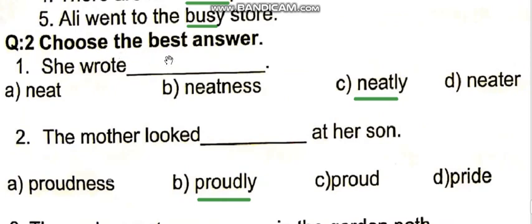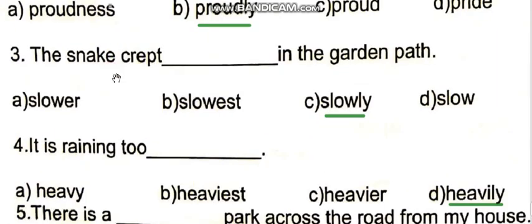Question number two: Choose the best answer. 'She wrote' — she wrote neatly. 'The mother looked blank at her son' — the mother looked proudly at her son. 'The snake crept blank in the garden path' — the snake crept slowly in the garden path. 'It is raining too blank' — it is raining too heavily.